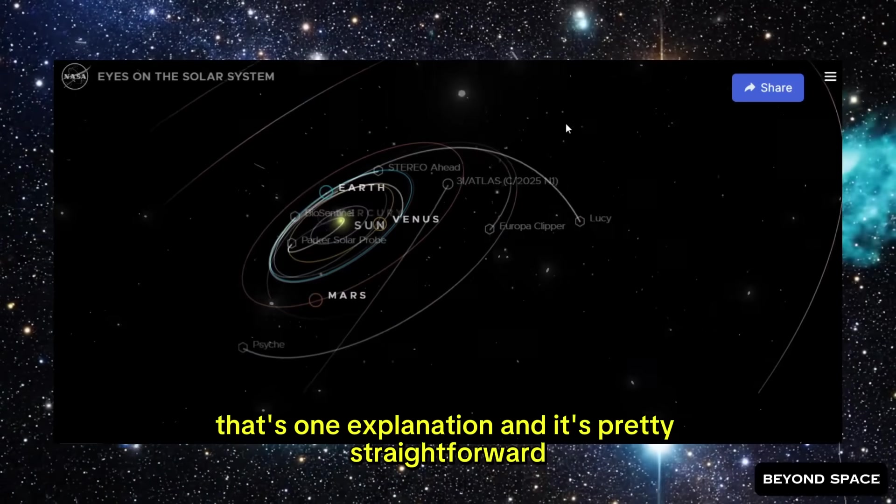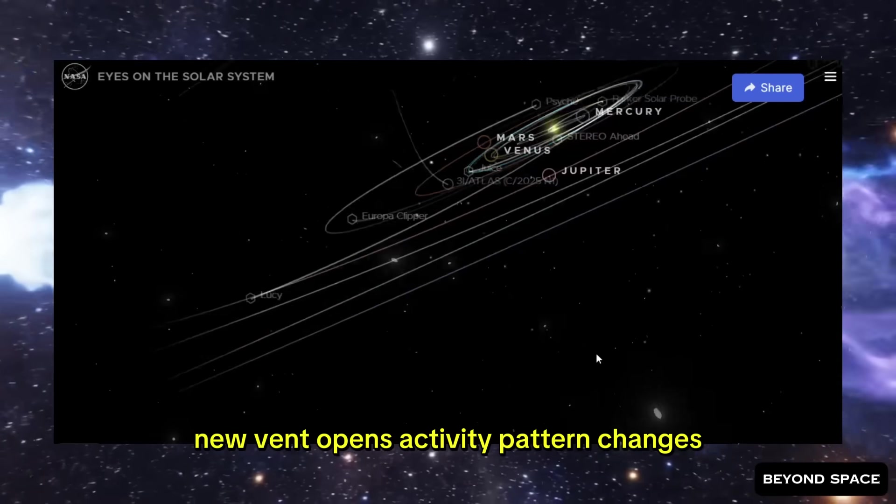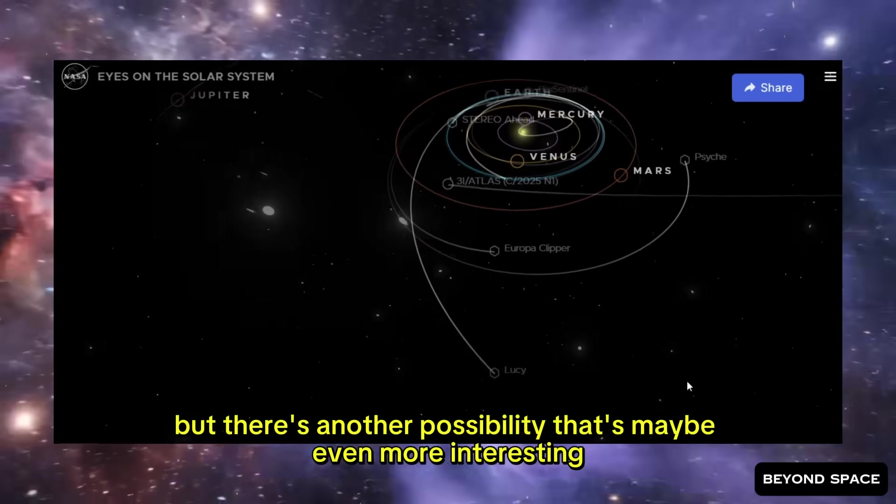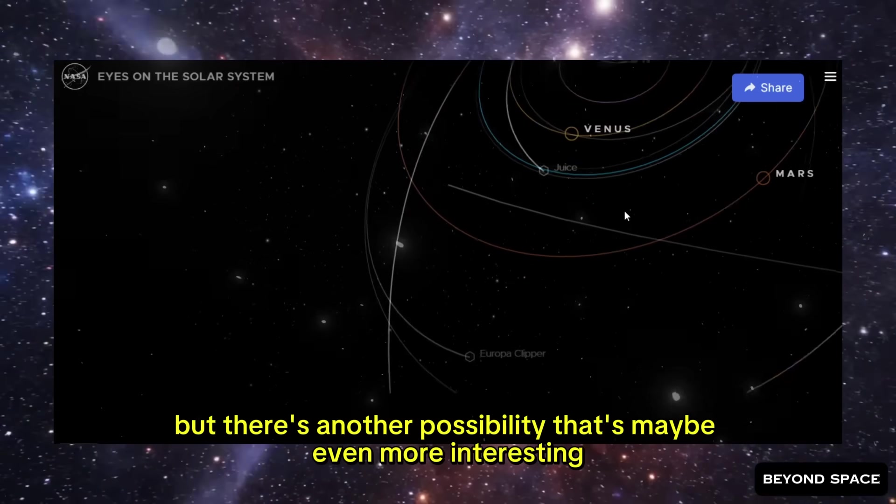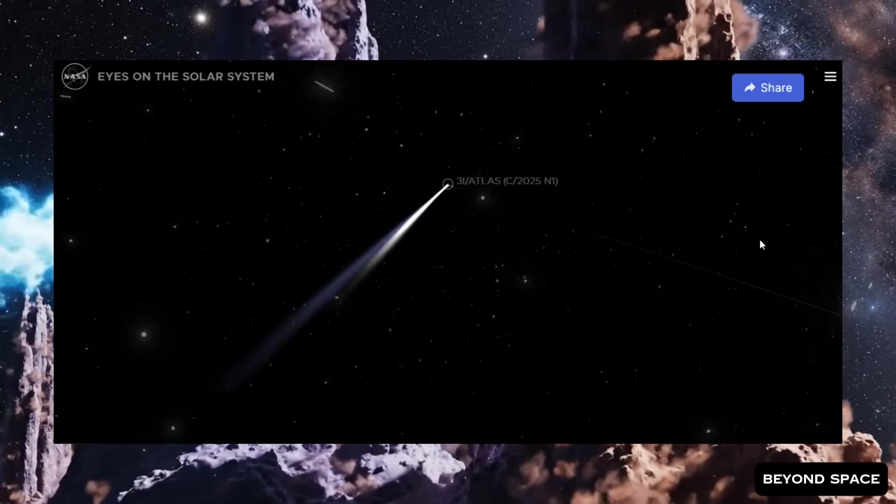That's one explanation. And it's pretty straightforward. New vent opens, activity pattern changes, everything shifts. But there's another possibility that's maybe even more interesting. It could be that the whole nucleus is changing how it spins. See, when jets fire off a comet, they don't just push it forward or backward or sideways. They also apply torque.